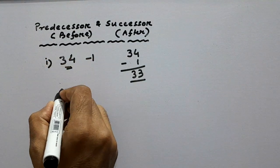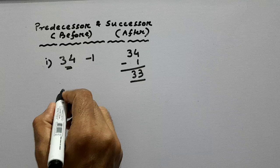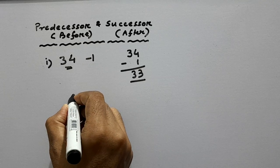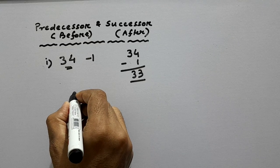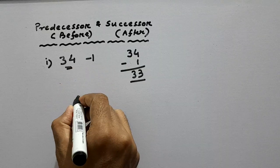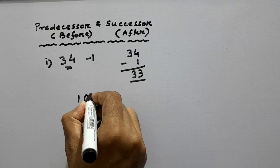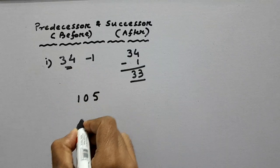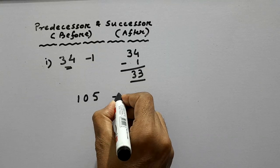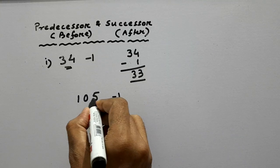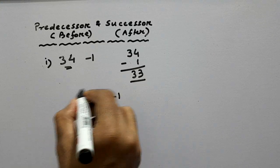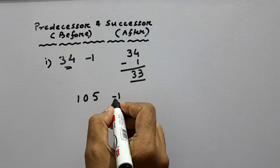Now let us take one more example. Say we are asked to find the number before 105. So what we will do? We will minus 1 from this number to find the number before 105.